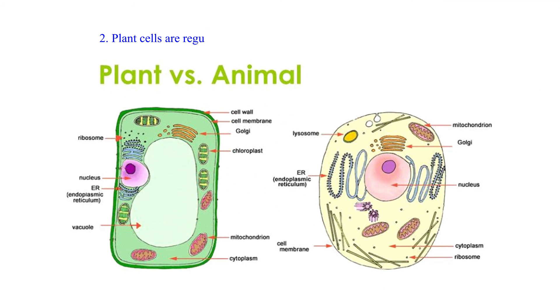2. Plant cells are regular in shape while animal cells are irregular in shape.